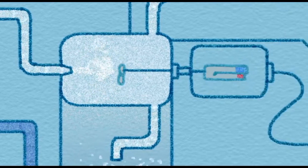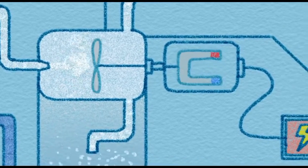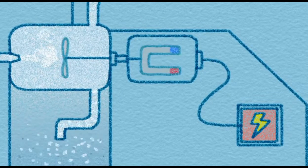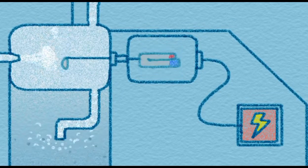In turn, these bladed rotors activate a magnet that generates the electric current. This magnet is part of a device known as an electric generator.